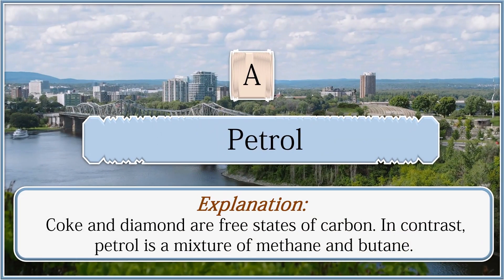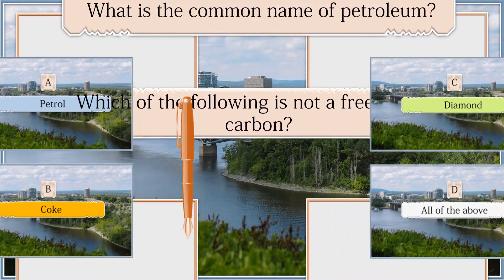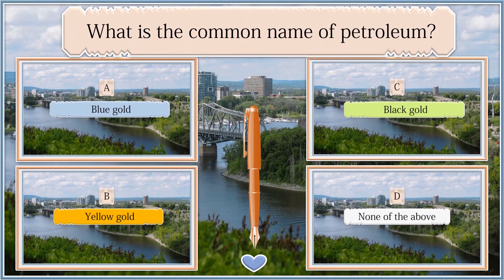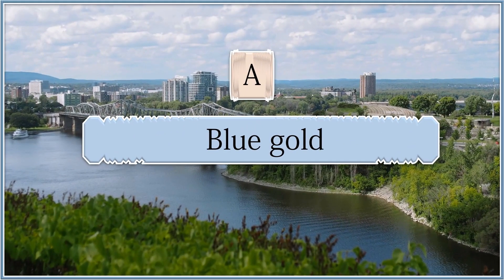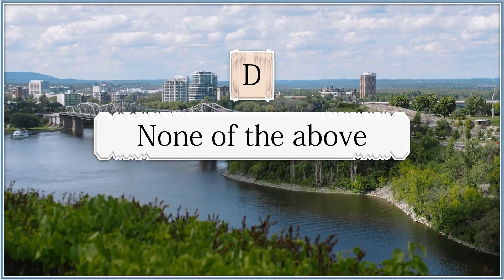Which of the following are vital constituents of petroleum? Hydrocarbons, butane, liquefied petroleum gas, jet fuel. The answer is all of the above. Butane, liquefied petroleum gas, jet fuel, petrol, fuel oil, kerosene, and diesel are vital components of petroleum.